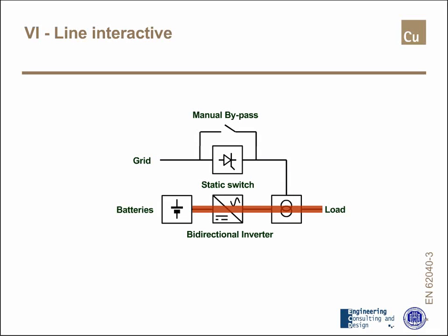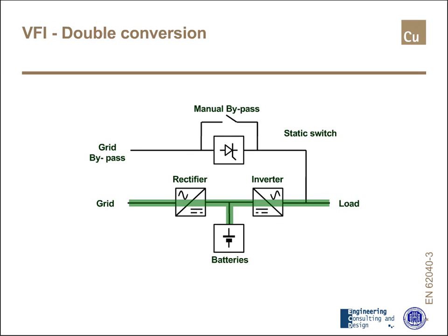Without the grid, the load is fed directly by the batteries. The last type is VSI — voltage and frequency independent — also called double conversion. The scheme is shown in the slide. In the presence of the grid, energy flowing through the green path is converted twice: from AC to DC to charge the batteries, and to supply an inverter that supplies the load.